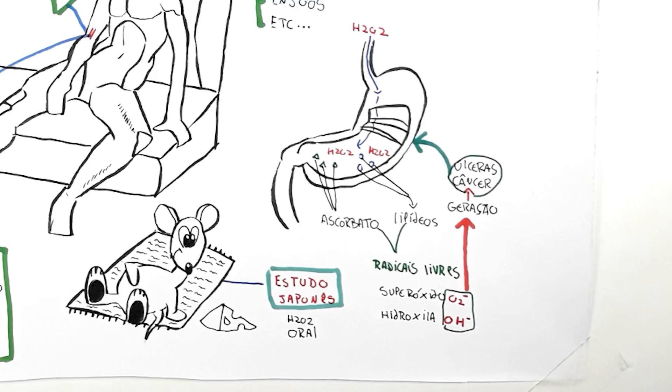The rats used much higher doses than would be tolerable for human beings. Two, they had full stomachs. So when the peroxide came into contact with substances that were previously already present there, there was generation of harmful free radicals. You can avoid this by using it with an empty stomach, for example, and using antioxidants if necessary at the correct timing, avoiding any type of problem.